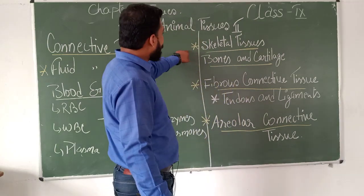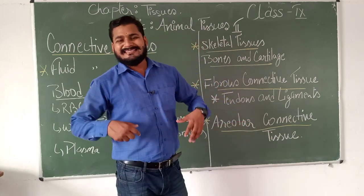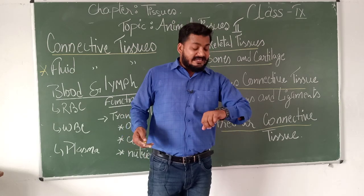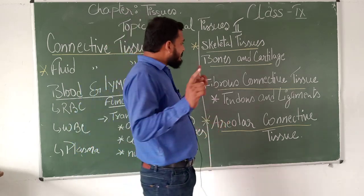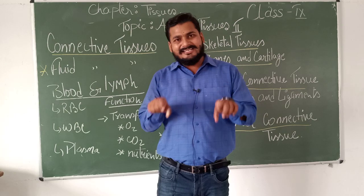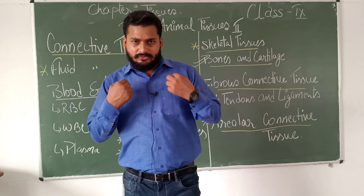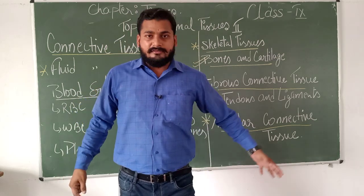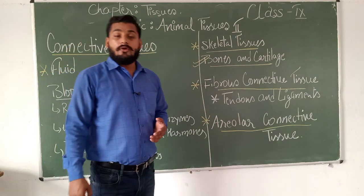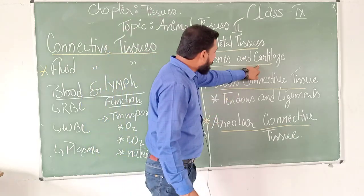Then we have skeletal connective tissue. The skeletal system means our bones — the framework of the body. The skeletal system is made up of two things: number one is bones, and number two is cartilage. Bones are hard, calcium-based substances. They have different shapes in our body — in the ribcage they are somewhat circular, in the thighs and legs they are very long. So they can be of different shapes and sizes depending upon their location and the function they perform.